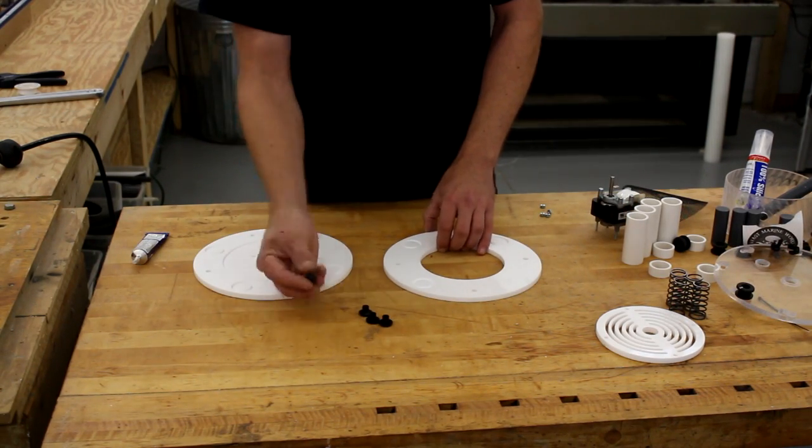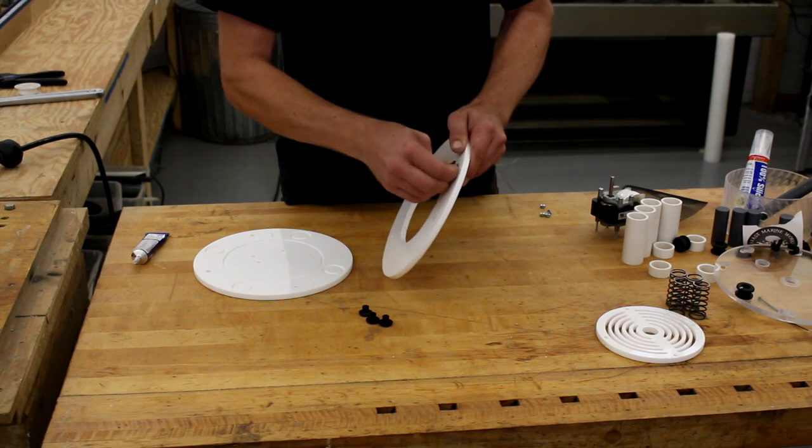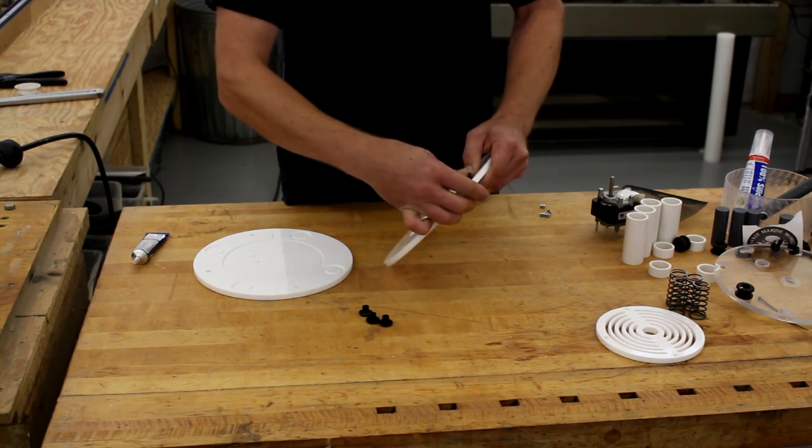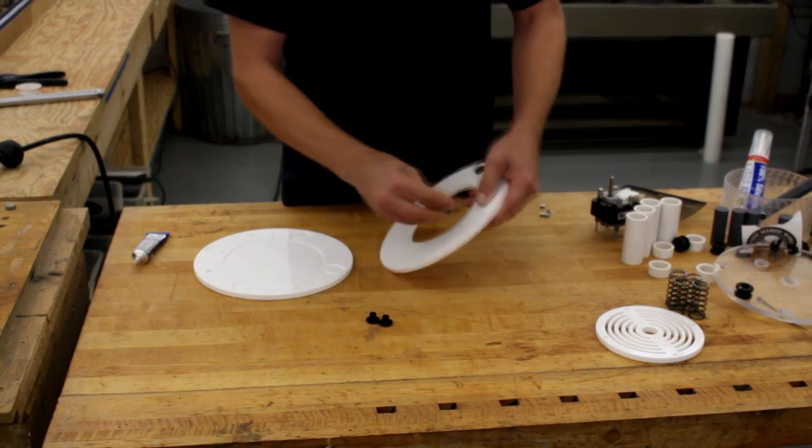Moving on, we are going to start assembling the vibrating base of the VIBE. First, we are going to push the rubber feet into the base plate. The feet go opposite of the groove side of this plate.